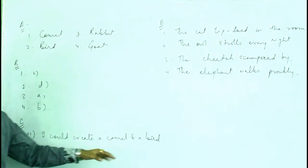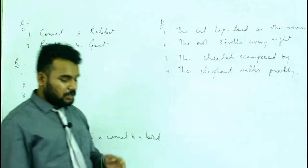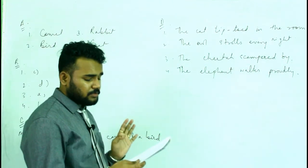Now the next C, number one: which of the hand shows described in the poem can you create? I could create a camel and a bird. If you think you can create anything else you can always write it. Next one, number D, two and three we have left.